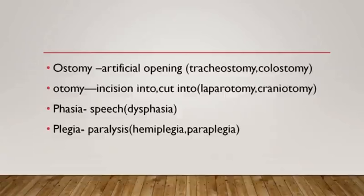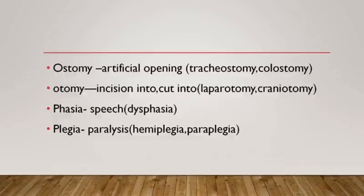The suffix -ostomy means artificial opening — it is surgically making an opening, an artificial opening made into any part for treatment's sake. Examples: Tracheostomy — an artificial opening made into the trachea, done when a person is unable to breathe or the trachea or nasal passage is blocked. Colostomy — an opening made into the colon through the abdomen.